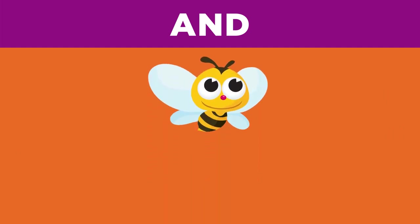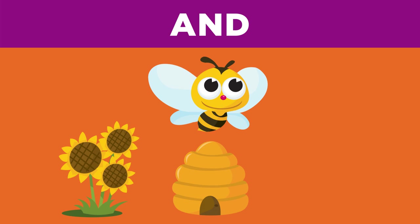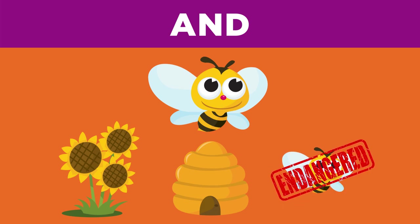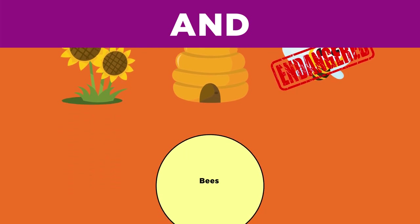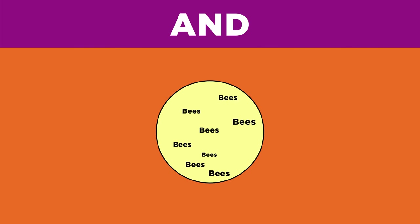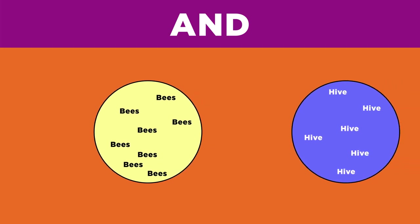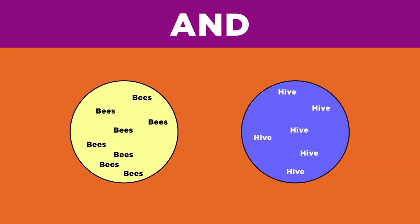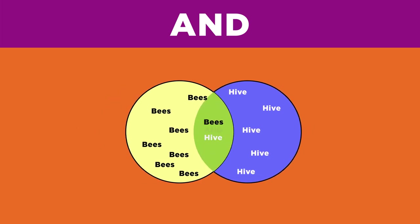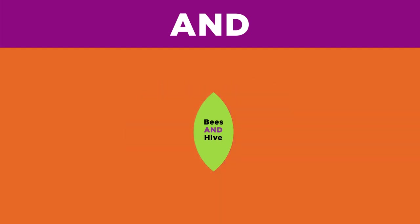Let's say you have to write a report about bees, and you need to cover the areas of hive life, pollination, and their endangered status. If you just use the keyword bees, you will get too many results. However, you can focus your results by adding one aspect of your topic. For example, first search for bees AND hive. As you can see, adding AND hive removed all of the findings that do not use both keywords, resulting in far fewer search results.